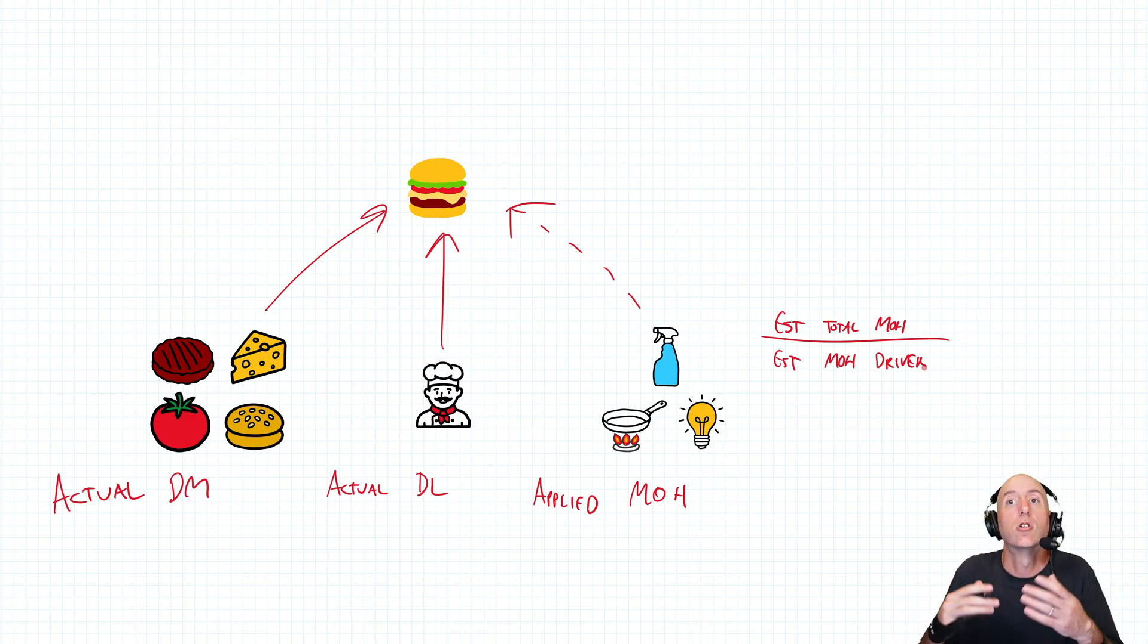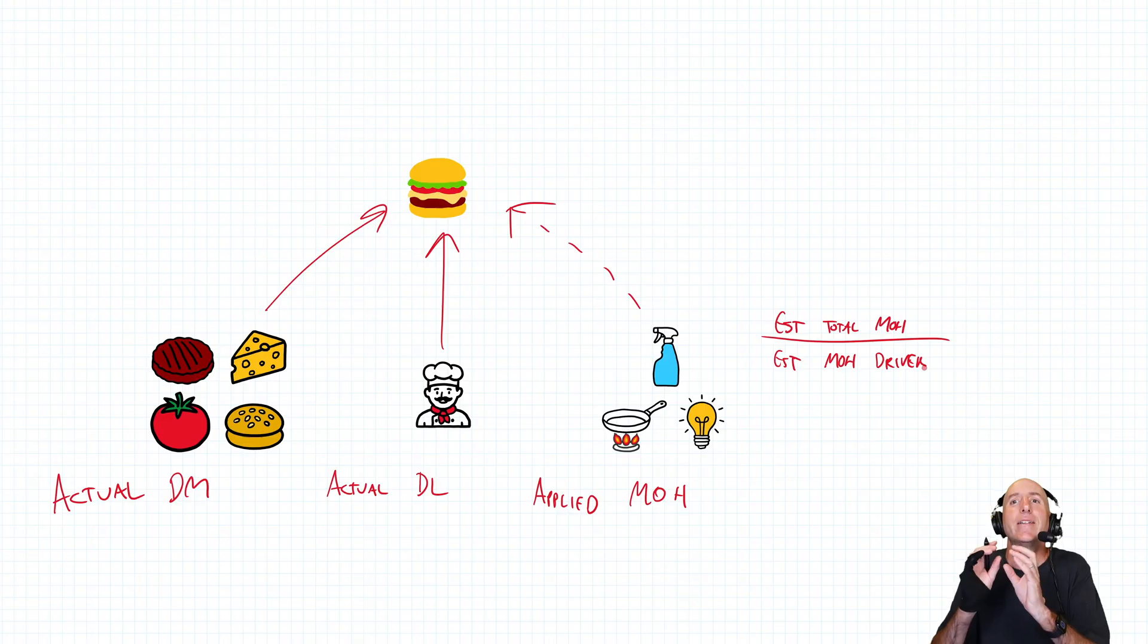For example, direct labor hours. The more direct labor hours I have, the more overhead I should have. So I take my estimated overhead, divide by my direct labor hours, and then when I make the burger, I just apply it based on how many labor hours the burger took.